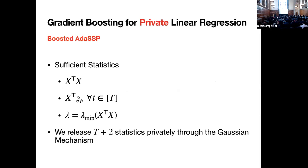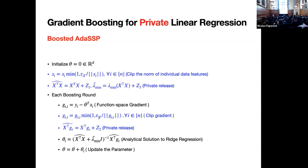This is where our algorithm, Boosted SP, kicks in. We initialize theta to zero, clip all feature norms to the data-independent clipping bound tau_x, then privately release two statistics: the private covariance matrix and the private regularization term. We calculate the functional space gradient (the residual), clip the residual based on the data-independent clipping bound for labels, add noise to release it privately, then solve a ridge regression problem and update the parameters. With this approach, we see improvements after the first round because the clipping makes each boosting problem different.